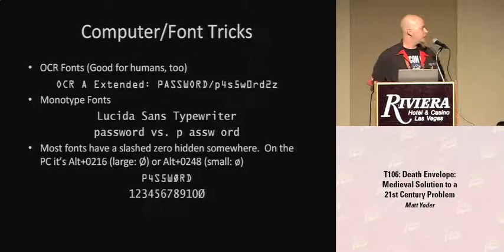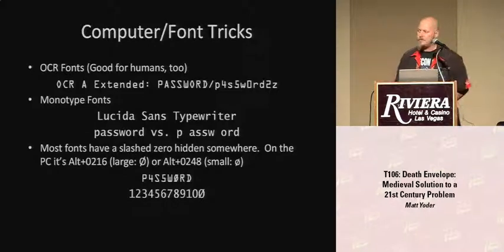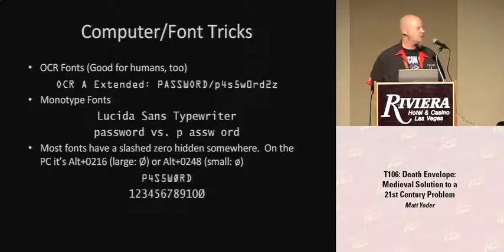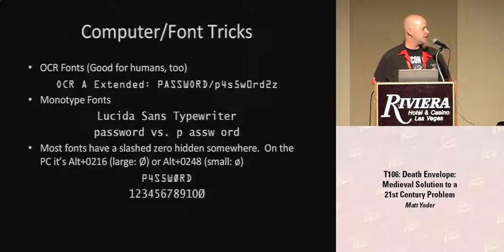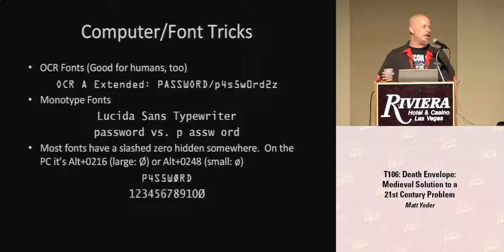Some of these tricks you want to use if you're creating your envelope on the computer: OCR fonts — freely available — and in the same respect that a computer can read them effectively, a human can read them as well. Monotype fonts show spaces. If you're giving a passphrase, you're going to have spaces, and a lot of operating systems will take a space as part of a password, so you want it to be obvious that that space exists. Slash zeros — most fonts are going to have a slash zero available. I indicated how to get to them on a PC; I have no idea on a Mac.